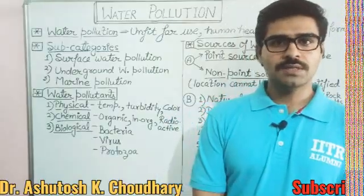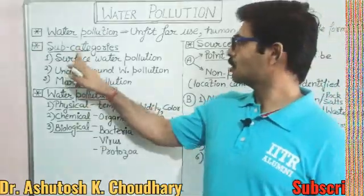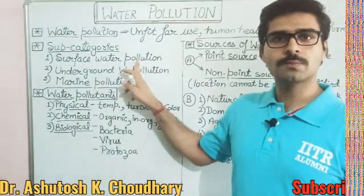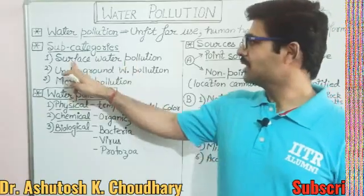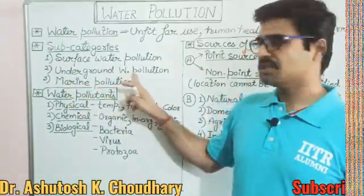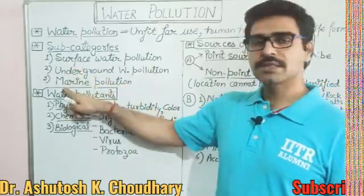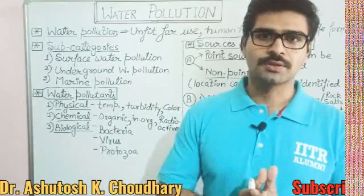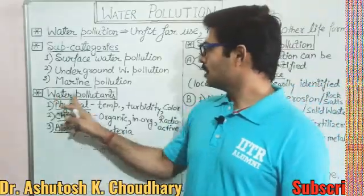Water pollution has harmful effects on human health and other life forms. We can classify water pollution into three categories. First is surface water pollution, which relates to surface water bodies like rivers, lakes, and ponds. Second is underground water pollution. Third is marine pollution, which refers to pollution in seas and oceans.